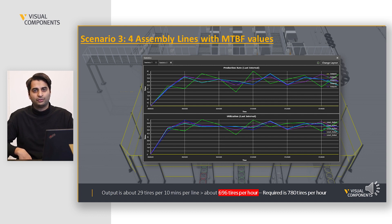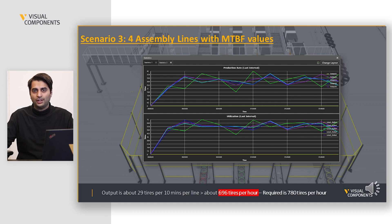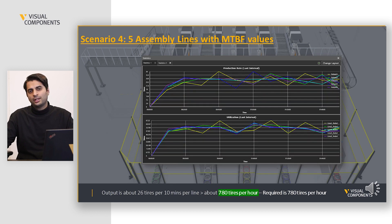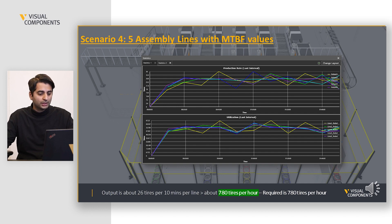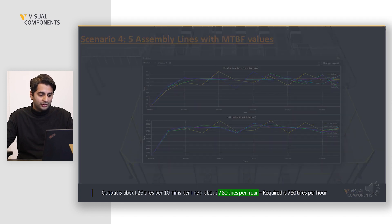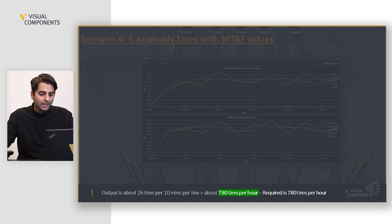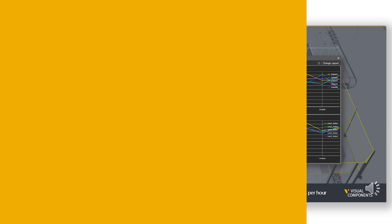Now let's look at Scenario 4: five assembly lines with maintenance. The output is about 26 tires per 10 minutes per line, which is just about equal to the required goal of 780 tires per hour. So it's safe to say that this is the most efficient design.